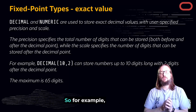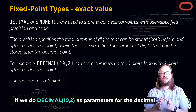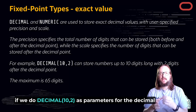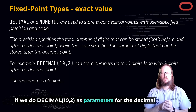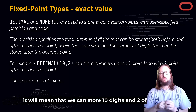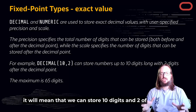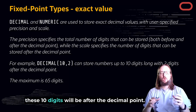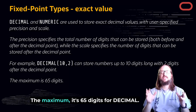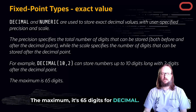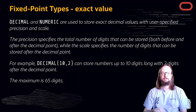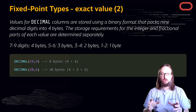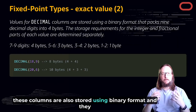DECIMAL, also known as NUMERIC, stores the exact decimal value with user-specified precision and scale. For example, DECIMAL(10, 2) means we can store 10 digits total, and 2 of those 10 digits will be after the decimal point. The maximum is 65 digits for DECIMAL.